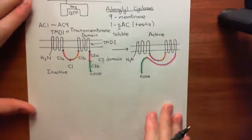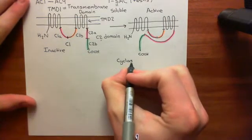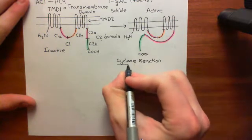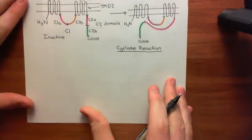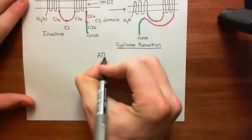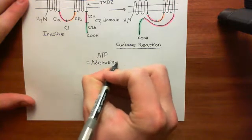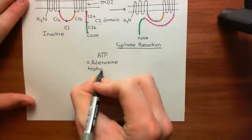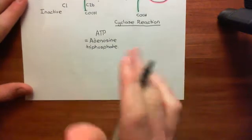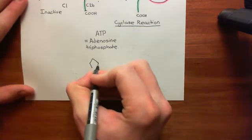The functional active enzyme will catalyze the cyclase reaction — but what exactly is that reaction? The cyclase reaction is the conversion of adenosine triphosphate, ATP, into cyclic AMP and pyrophosphate. To answer that, we need to be familiar with what adenosine is, and then we'll progress to adenosine triphosphate. Adenosine is the name for adenine bound to ribose.